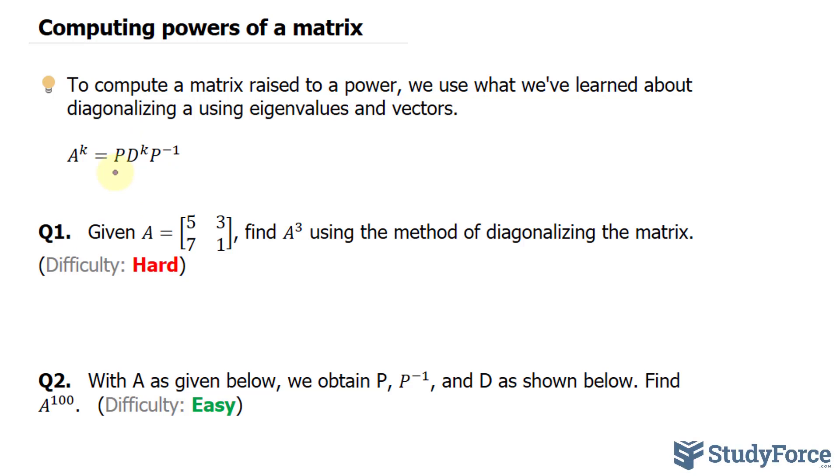First, we find the eigenvalues. To find the eigenvalues, we find the determinant of this expression, A minus lambda times its identity is equal to 0. So we have 5, 3, 7, and 1.